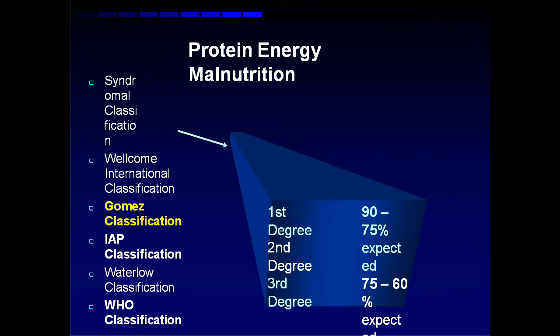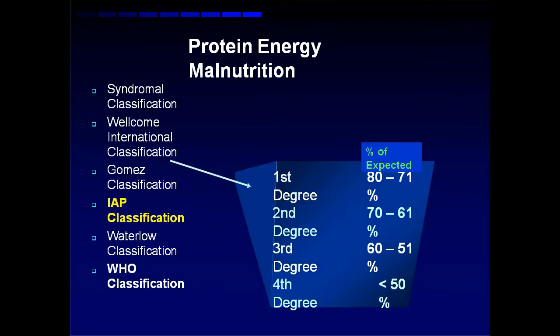Then comes Gomez classification. When the weight is 90 to 75 percent of expected, that is first degree. When it is 75 to 60 percent, it is second degree, and third degree is less than 60 percent. You also need to remember IAP classification: first, second, third and fourth degree, with percentages 80 to 71, 70 to 61, 60 to 51, and less than 50.